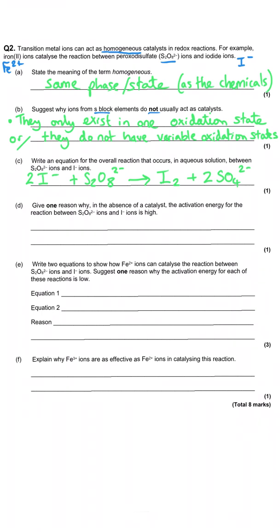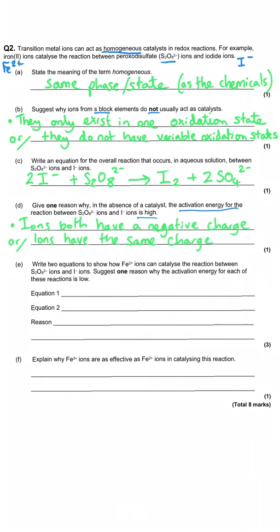The question asks why, in the absence of a catalyst, the activation energy for the reaction is very high. This comes down to the reactants themselves: iodide carries a negative charge and peroxodisulfate is also 2−. Because both ions have the same (negative) charge, they repel each other, so energy has to go in to make them come together. Be careful to say it's the ions that have charge, not molecules.